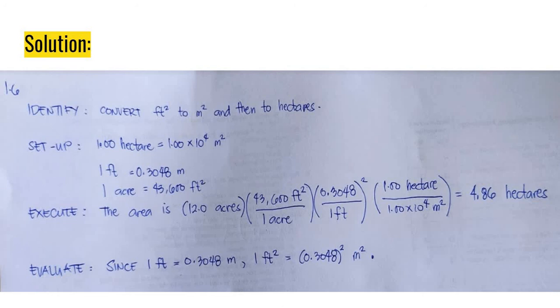Evaluate. Since 1 feet equals to 0.3048 meters. So, 1 square feet equals to 0.3048 square meters. That's it for our example.